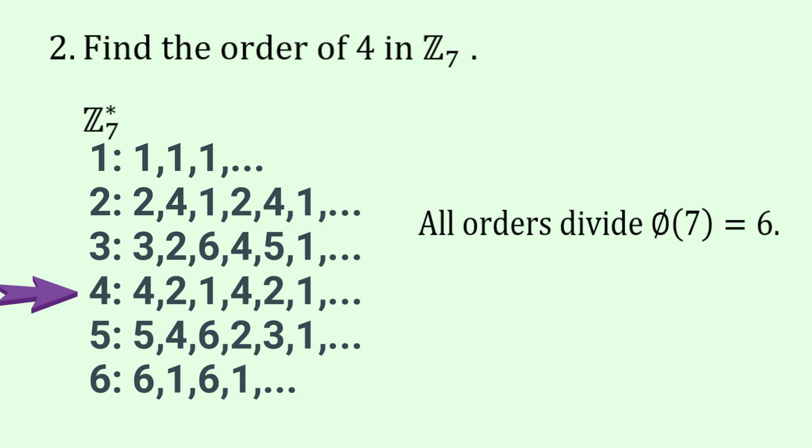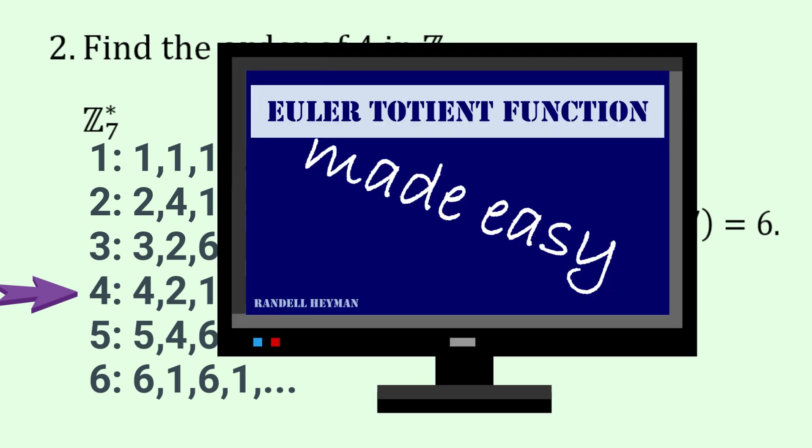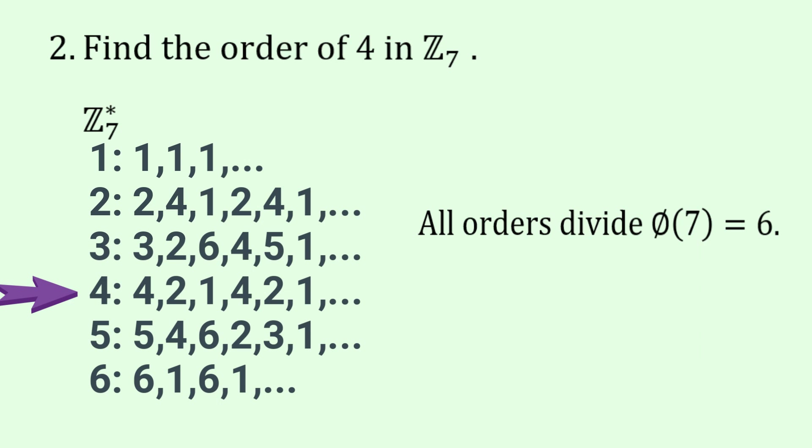So if you want to understand the fifth question, that relationship between the primitive elements and the order, then you need to understand the Euler-Totient function, which is given this symbol phi. So have a look at my video, Euler-Totient function made easy, if you're interested in understanding question 5 when we get to it.